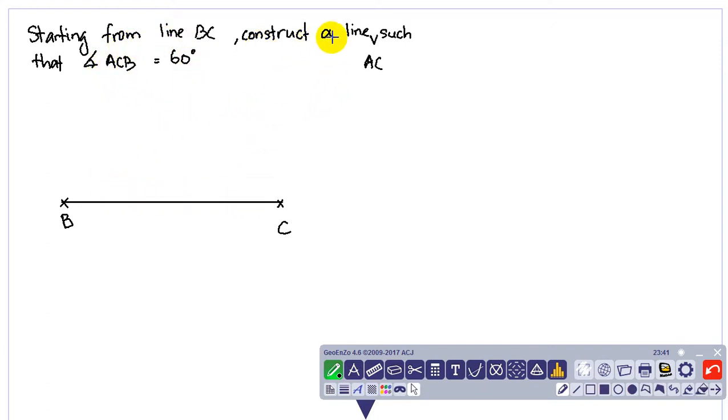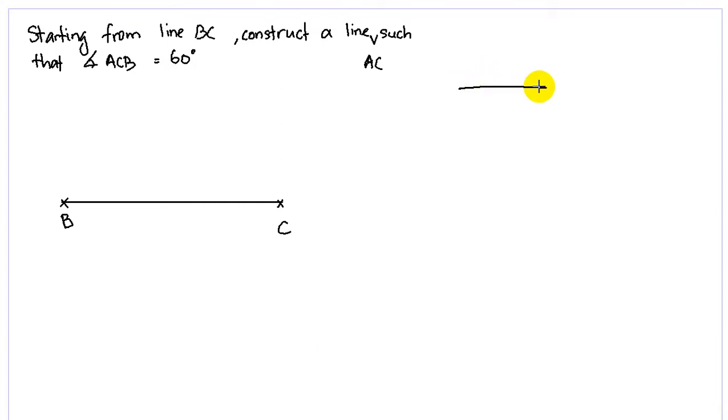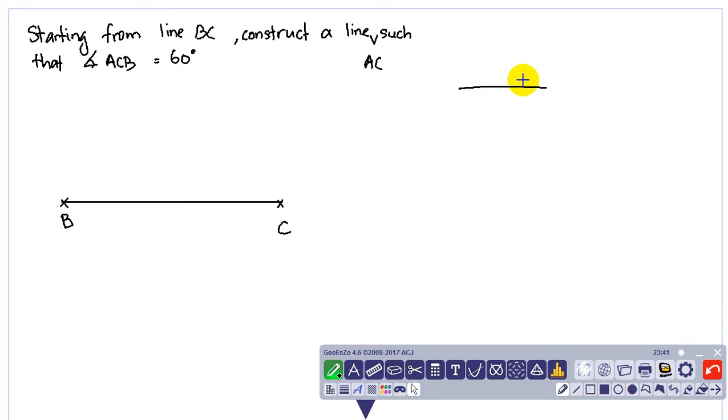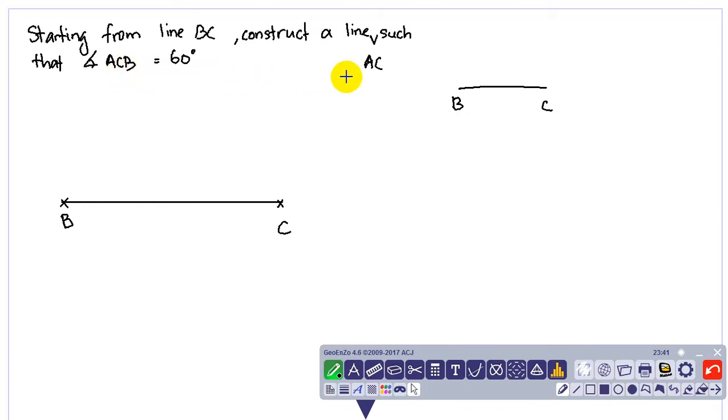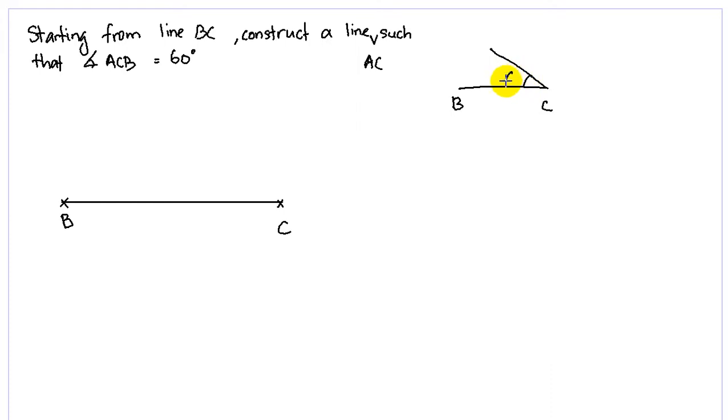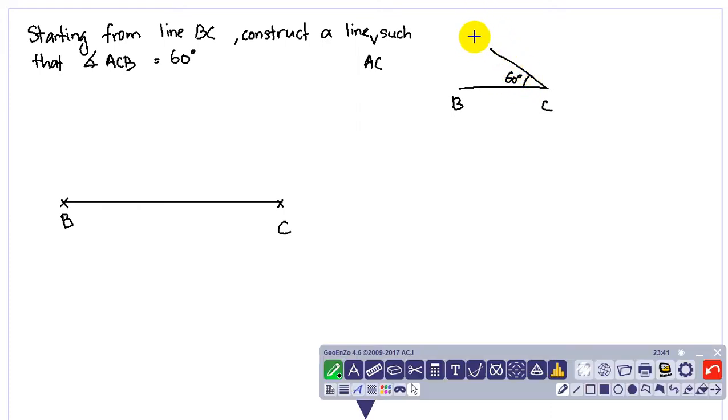If the question changes a little bit: starting from the line ABC, construct a line AC such that ACB is equal to 60 degrees. Before you construct, you can actually sketch a diagram to help use the plan. So this is B and this is C. The angle is ACB, so the angle must be at C here, 60 degrees over here, and this is A.